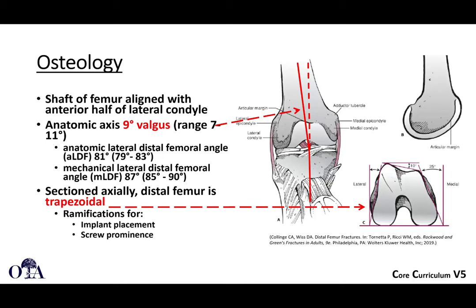This trapezoidal shape has implications for plate fixation. If a pre-contoured plate is placed in the wrong anterior versus posterior position, it may cause excessive translation. Even with retrograde intramedullary nailing for a femoral shaft fracture, when placing distal interlocking screws, a screw can appear fine on AP x-ray but actually be proud on a rotated view. These can be issues with implant and screw prominence, even for interlocking screws for a retrograde femoral nail.